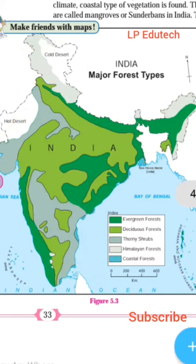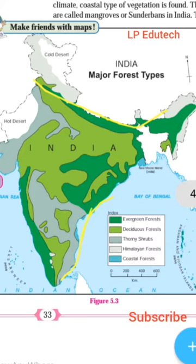Question one: Which forests are found in the western snow-capped region? Himalayan forests are found in the western snow-capped region. Question two: On which coast do you mainly find the coastal vegetation? Coastal vegetation is mainly found on the eastern coast of India.